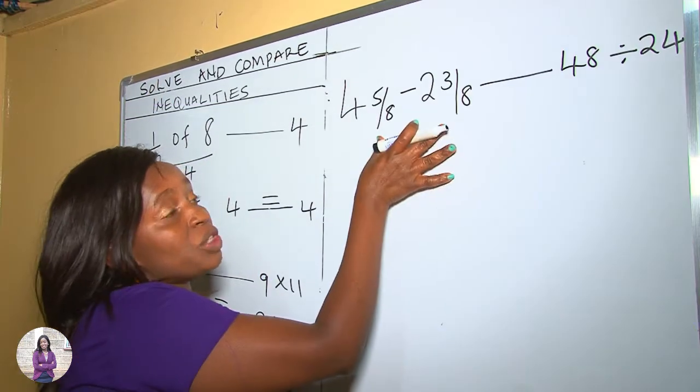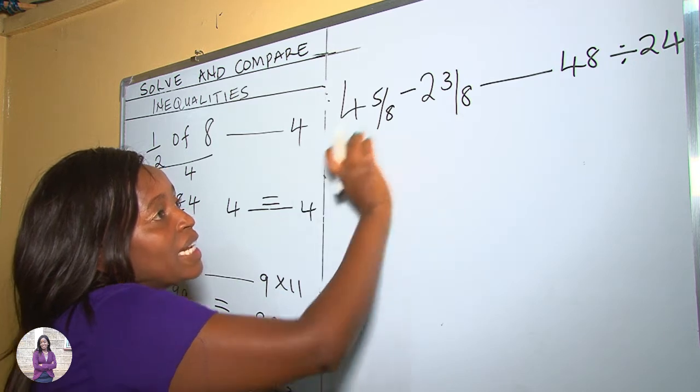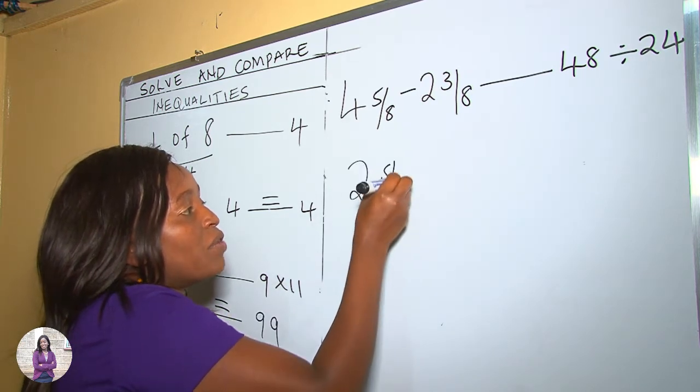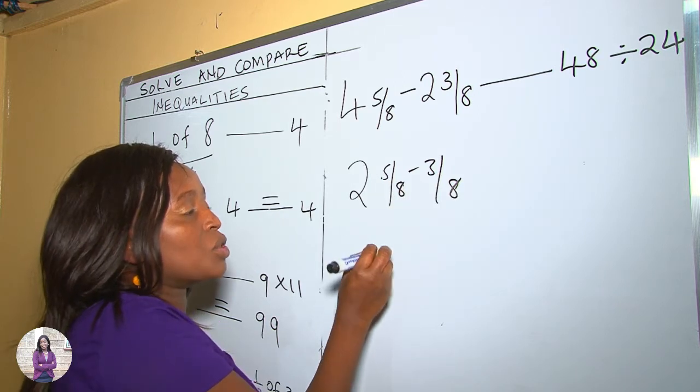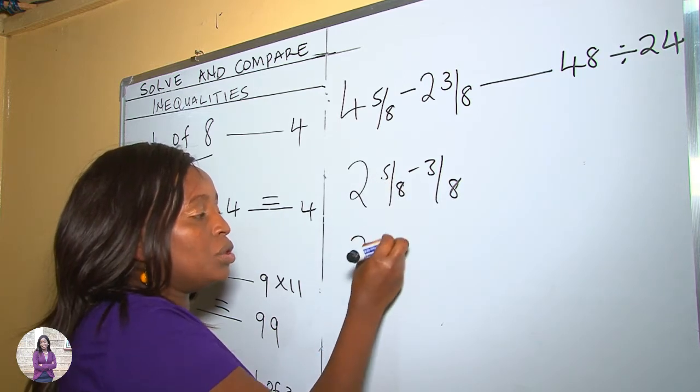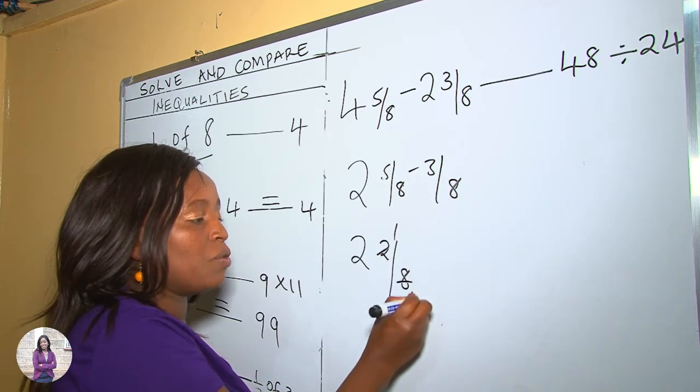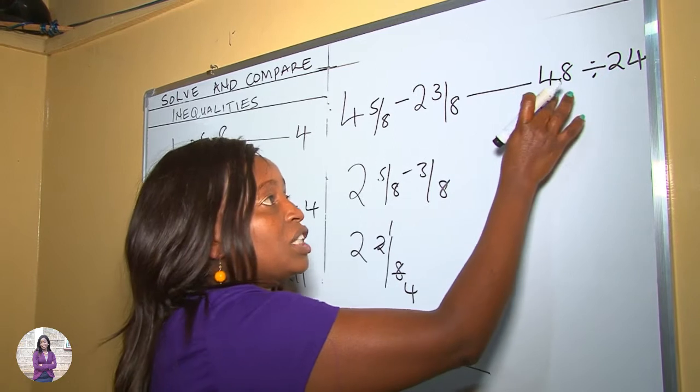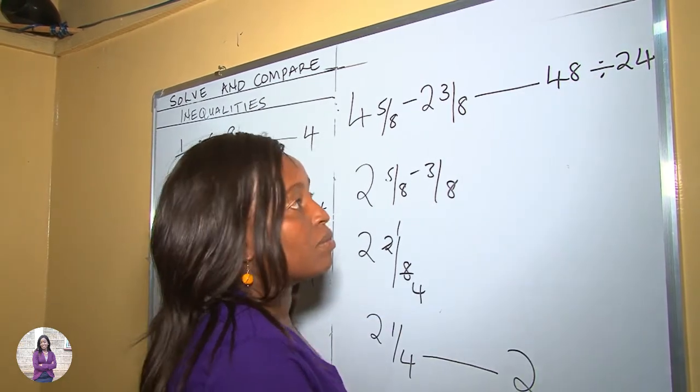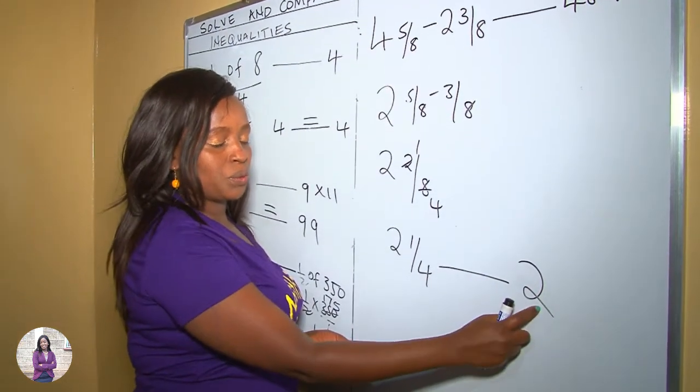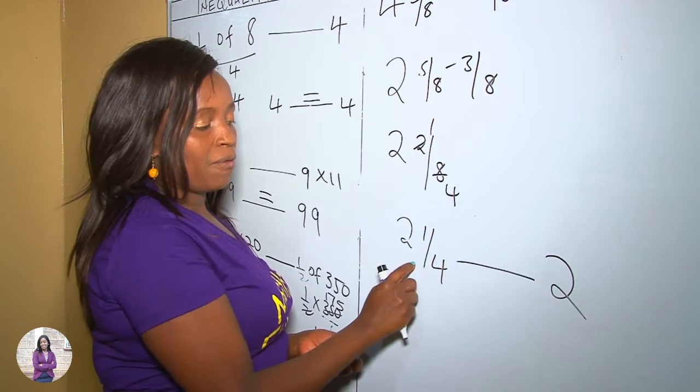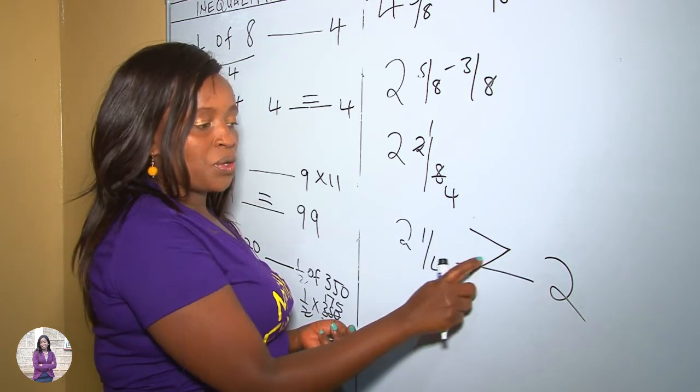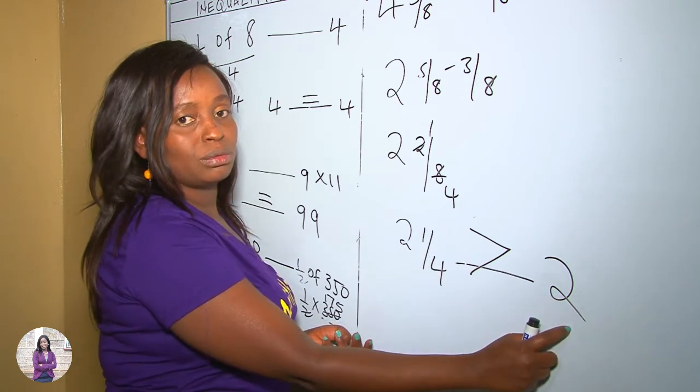Let's first solve before comparing. So on this side is a fraction, and this side is our numbers. 4 take away 2 is 2. 5 over 8 take away 3 over 8, 5 take away 3 is 2, so 2 and 2 over 8. We can simplify this by 2, 1 by 2, 4, so on the left we have 2 and a quarter. We leave our dash there for comparison. Then 48 divided by 24 is 2. 2 and a quarter and 2, this one is bigger than this, therefore the sign for showing bigger or greater is this. So when you are comparing now, we use this sign, meaning 2 and a quarter is greater than 2.